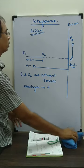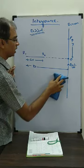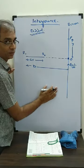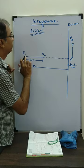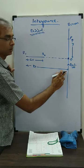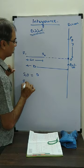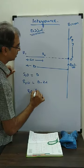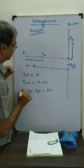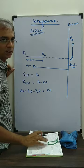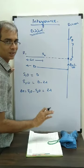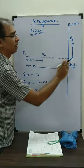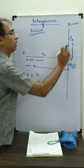Sources are coherent and they are in the same phase. Looking at point O, we find the path difference. S1O is D and S2O is D minus 2 lambda, so path difference S1O minus S2O is 2 lambda. When delta x is 2 lambda it is a condition of constructive interference, meaning here we get maximum intensity. If both have intensity I, we get 4I at O.